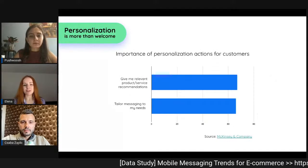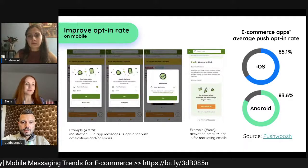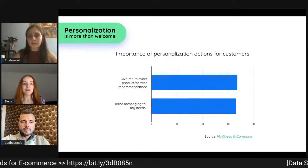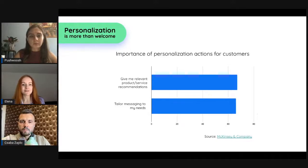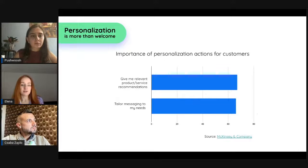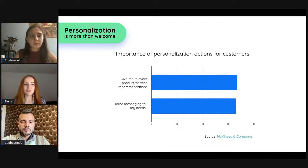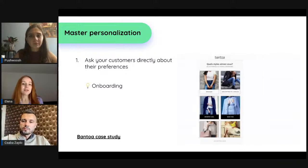Once you have an impressive number of users opted in for your notifications or emails, you want to deliver on the promise you made in your opt-in screen. This is where personalization steps in. Research shows that personalization is expected and even welcomed by customers when it comes to offering relevant products or messaging. The first option is to ask your customers directly what their preferences are.